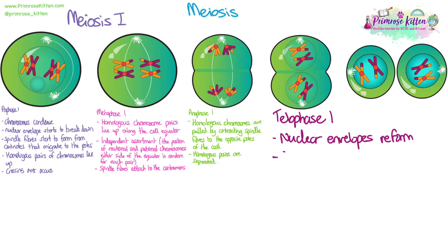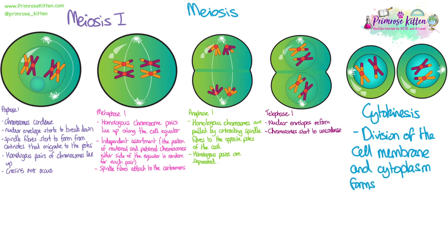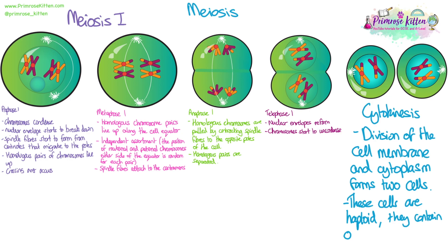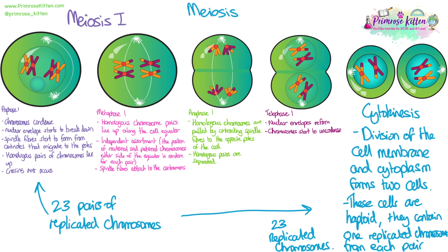Telophase one: the nuclear envelopes will form and the chromosomes will also start to uncondense. Finally, cytokinesis occurs — the division of the cell membrane and the cytoplasm — which forms the two cells. These cells are already haploid. They contain 23 chromosomes, one of each number, but they do not have 23 pairs. They still look like cross-shaped replicated chromosomes because they were replicated at the start of the process just before prophase one. So meiosis one takes a diploid cell with 23 pairs of replicated chromosomes and creates two haploid cells that have 23 replicated chromosomes.